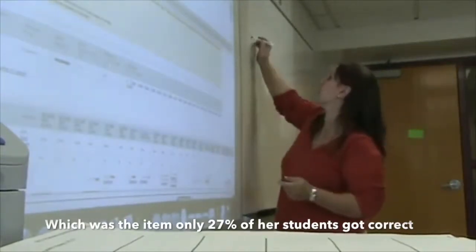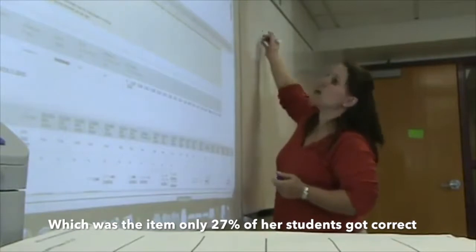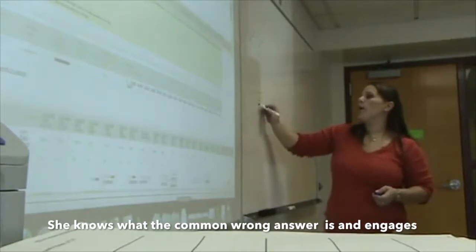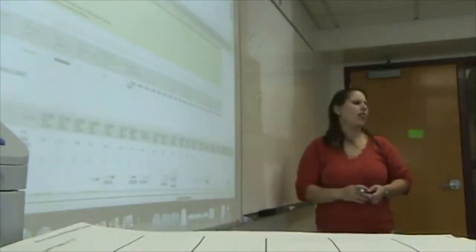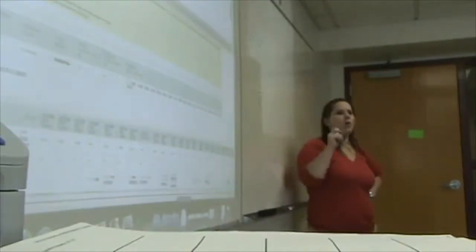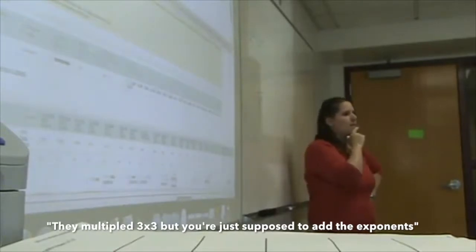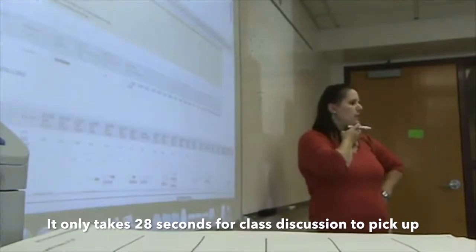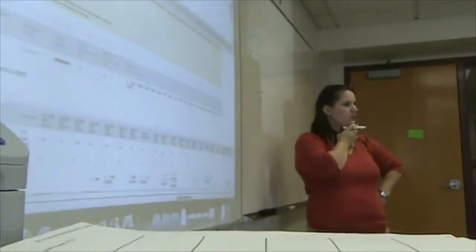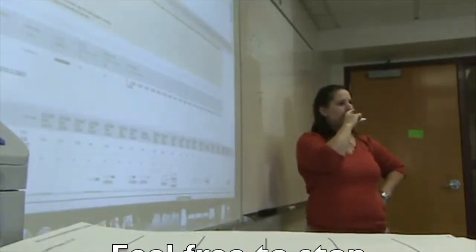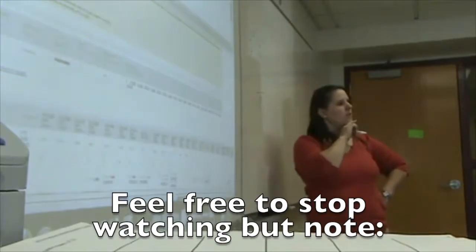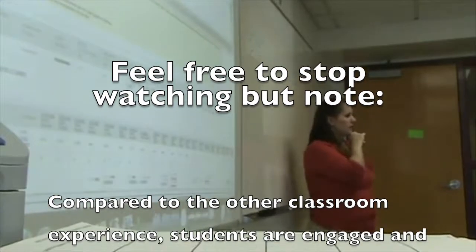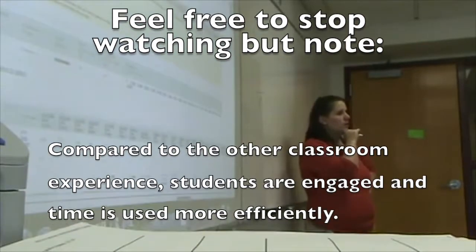3 to the negative 2nd times 3 to the negative 8th. Common wrong answer was 1 over 9 to the 10th. What's wrong with 1 over 9 to the 10th? They multiply 3 times 3 because you're just supposed to add the answer. Why don't we multiply the 3 times the 3? Because this exponent is just saying that number times that many times. If you just add the exponents because you're just multiplying that number that many times. They're like terms, so you don't have to change them.